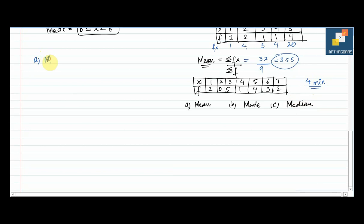For mean: find fx first — 1×2=2, 2×0=0, 3×5=15, 4×1=4, 5×4=20, 6×3=18, 7×2=14. Adding: 15+2=17, 17+4=21, 21+20=41, 41+18=59, 59+14=73. Sum of frequencies: 2+0+5+1+4+3+2=17. So 73 divided by 17 = 4.3. That is your mean.